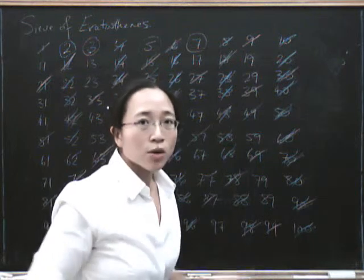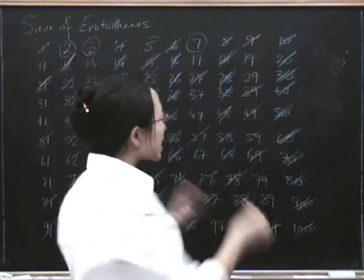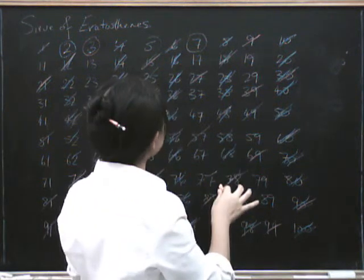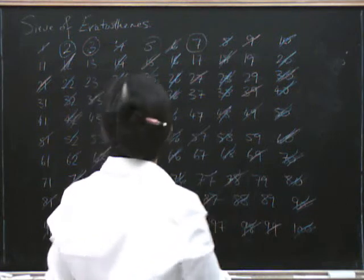And so now we've gone beyond 10, we don't have to do any more, so we're already done. So now anything that's currently not crossed out must be prime, so let's find them.